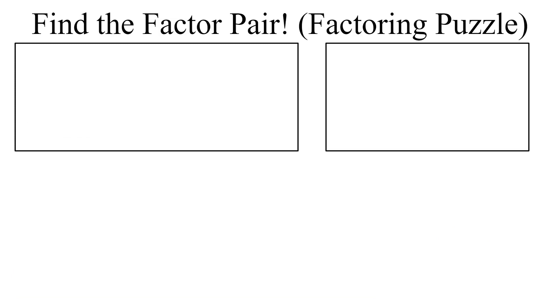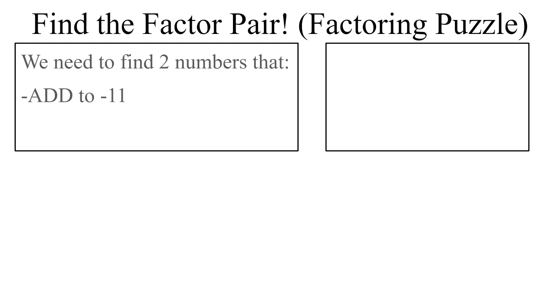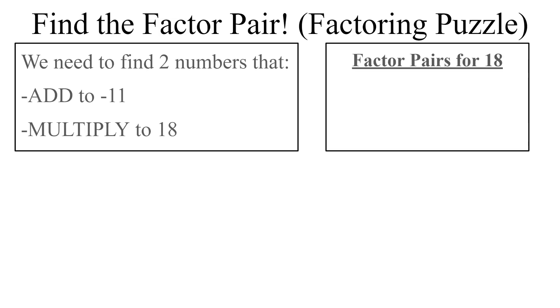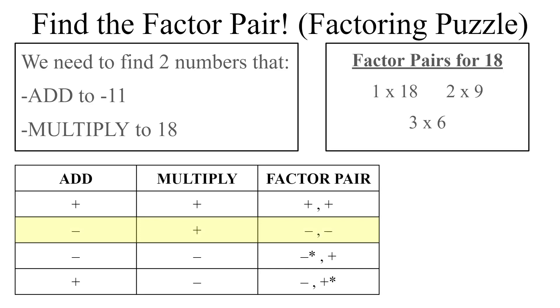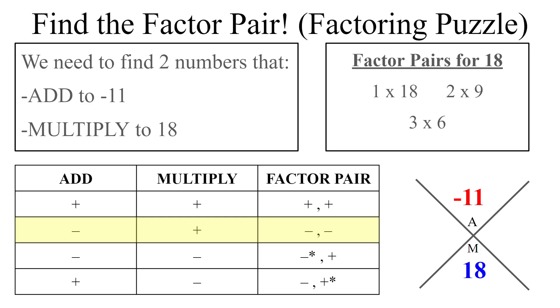One final example: add to negative 11, multiply to 18. Ways to get 18 are 1×18, 2×9, and 3×6. We're in the second row of the chart — both negative, so both numbers are negative and they'll work together. The numbers that sum to 11 are 2 and 9, so both negative: negative 2 and negative 9. Pay close attention to how I write this in the bottom right corner, as I'll be doing that throughout the rest of the video.